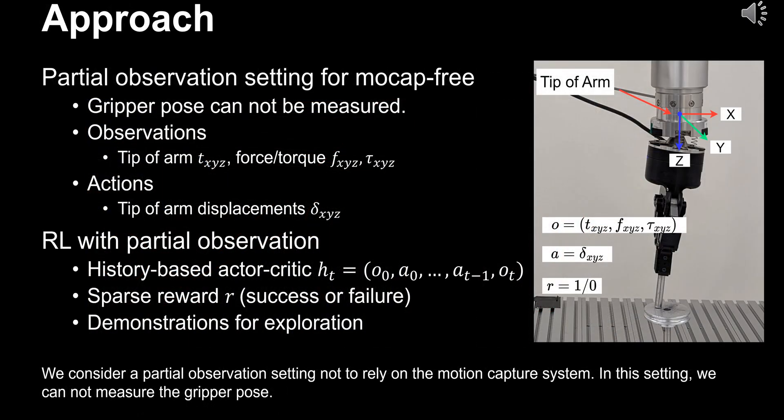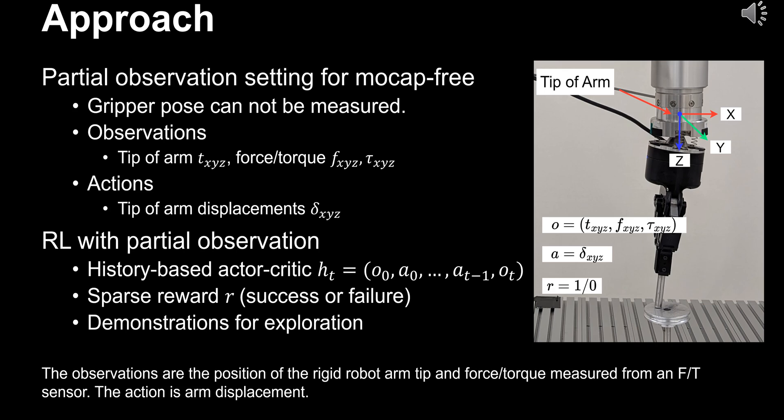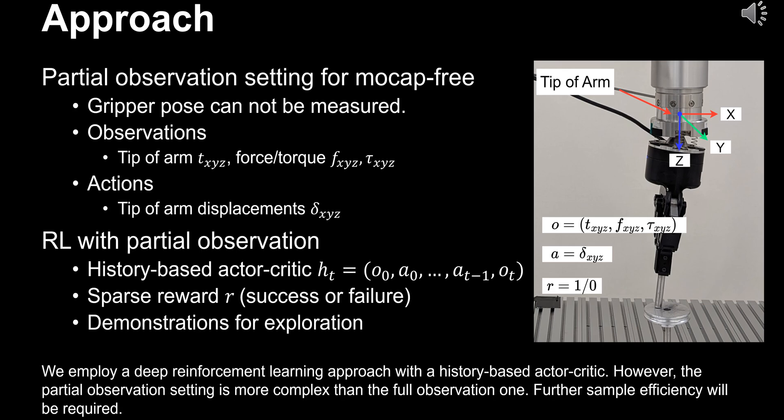We consider a partial observation setting not to rely on the motion capture system. In this setting, we cannot measure the gripper pose. The observations are the position of the rigid robot arm tip and force torque measured from an FT sensor. The action is arm displacement. We employ a deep reinforcement learning approach with a history-based actor-critic.